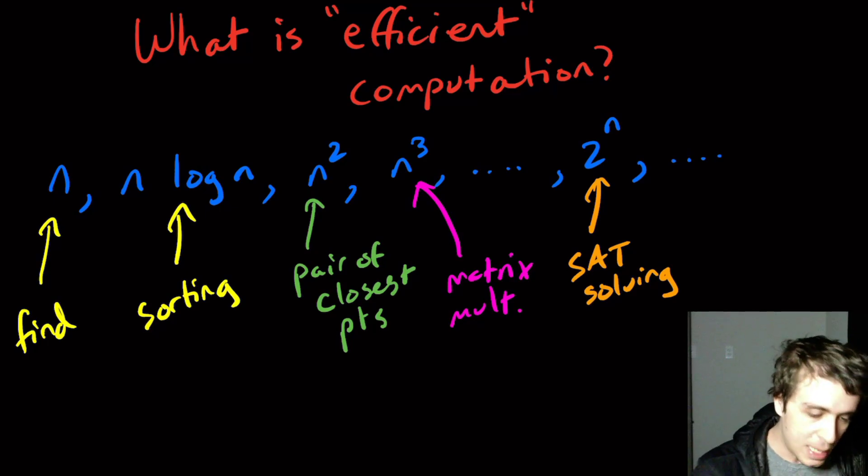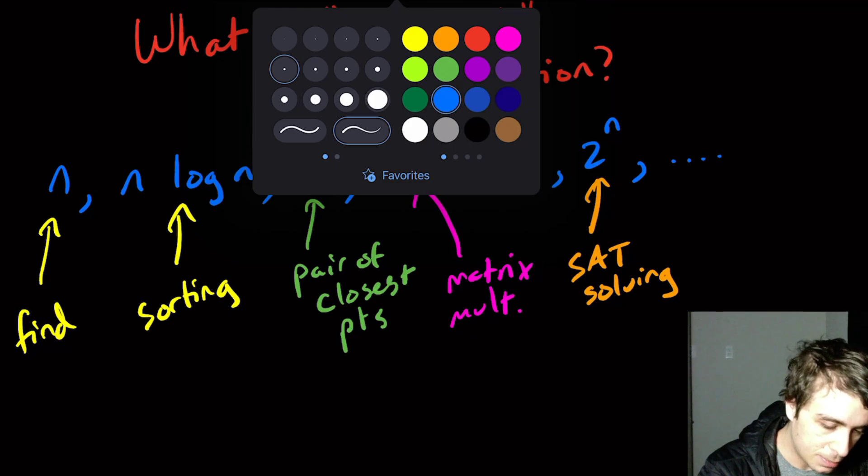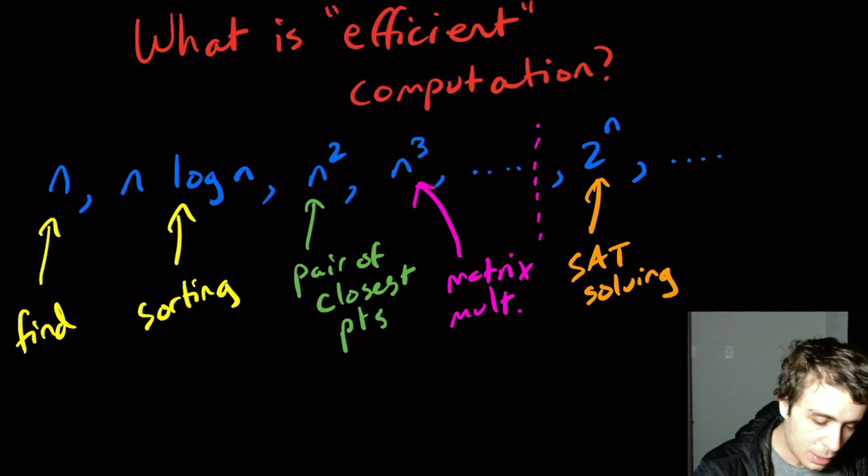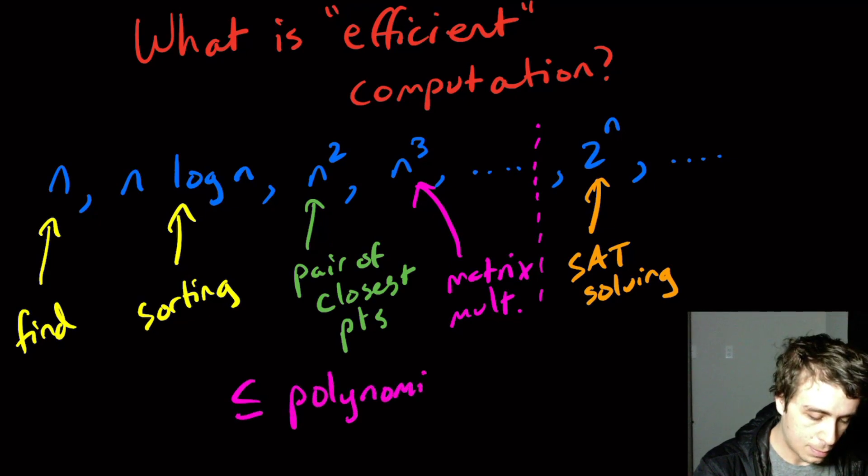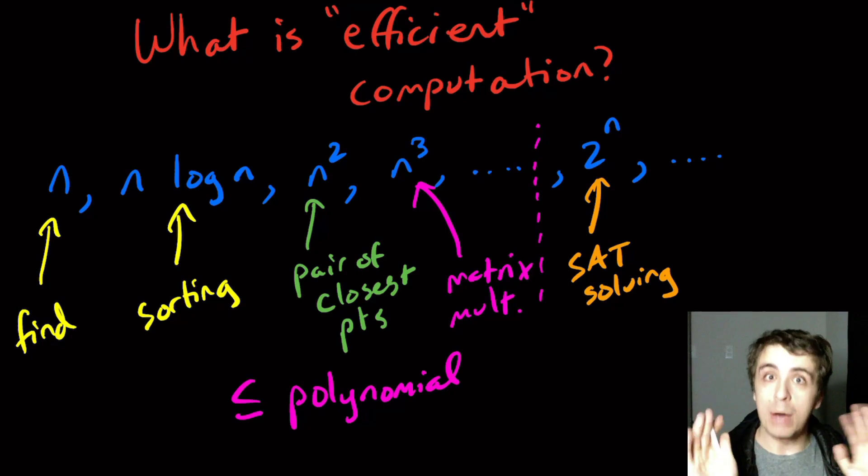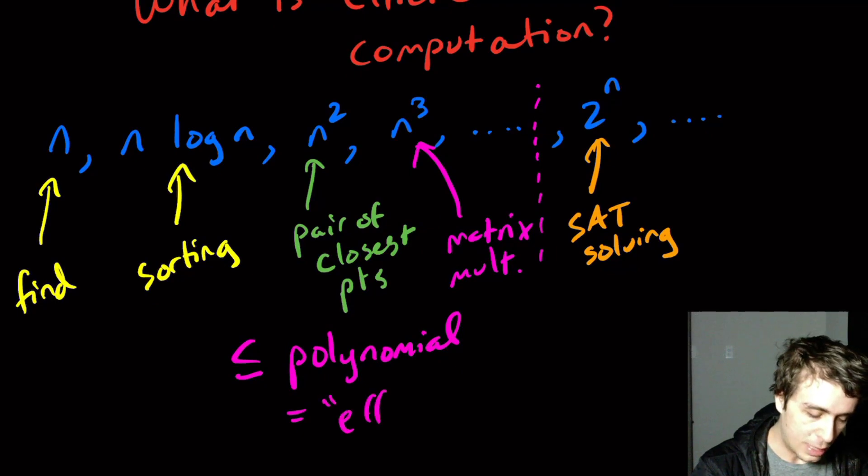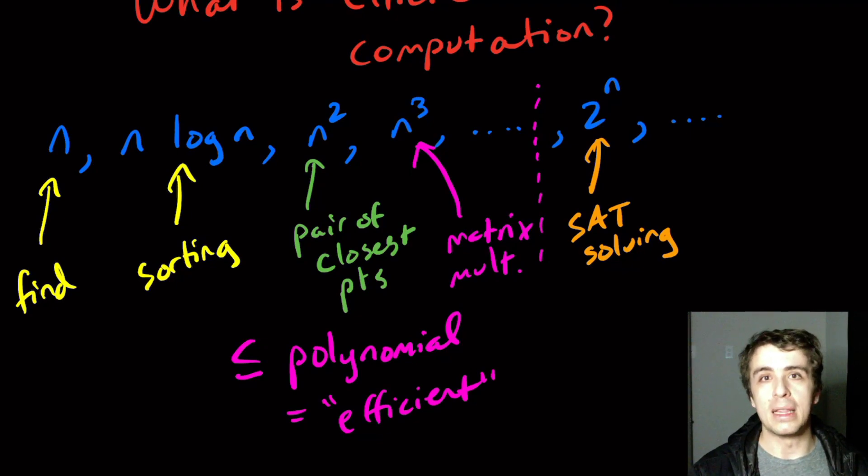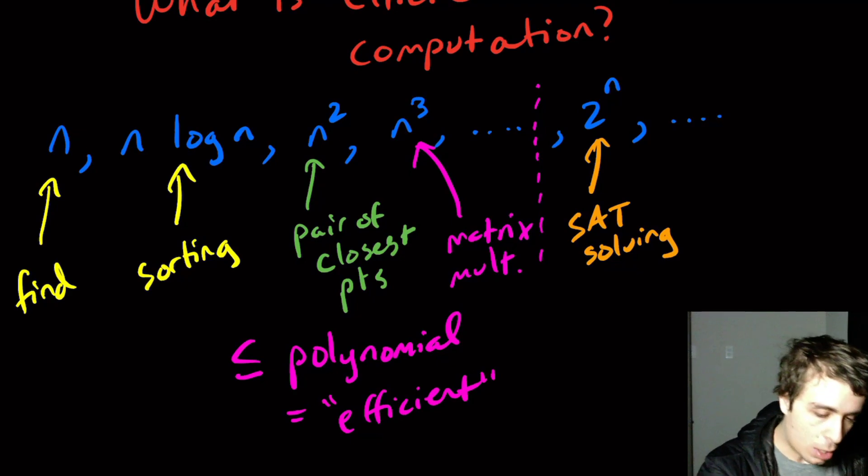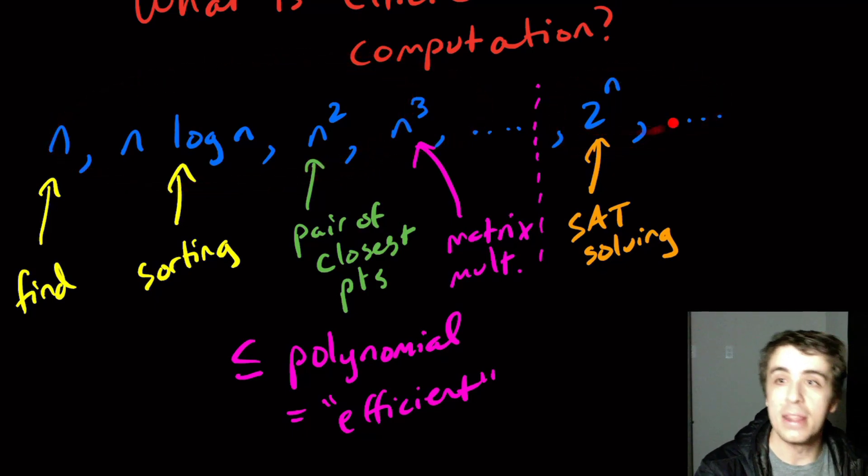It used to be that we drew a line in the sand to say if your runtime is less than or equal to some polynomial, then we call that efficient. This used to be the definition, although it's less true now. There was a big movement in the 1970s to classify algorithms that run in polynomial time as efficient. So all of these ones down here would be efficient and the exponential runtimes are not efficient.